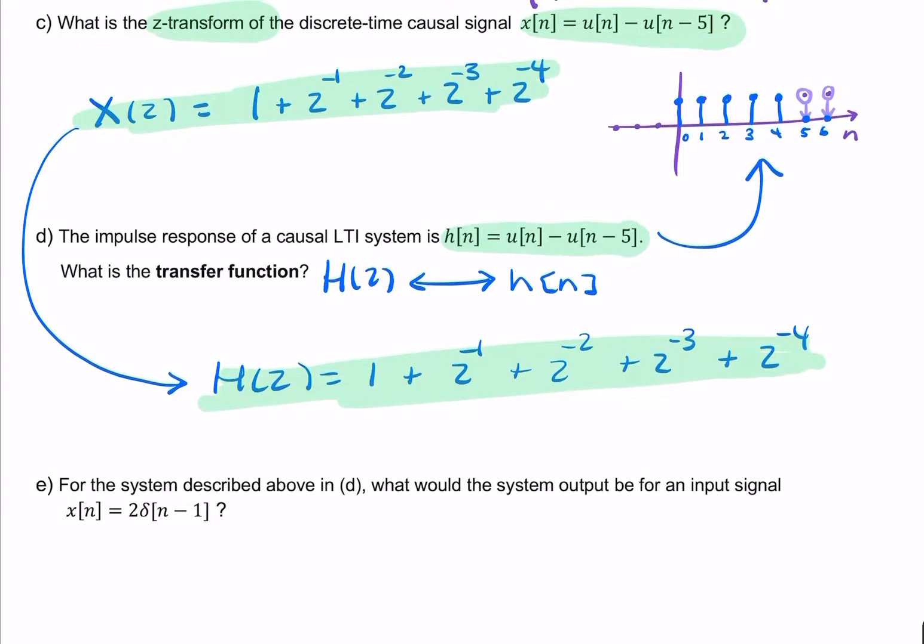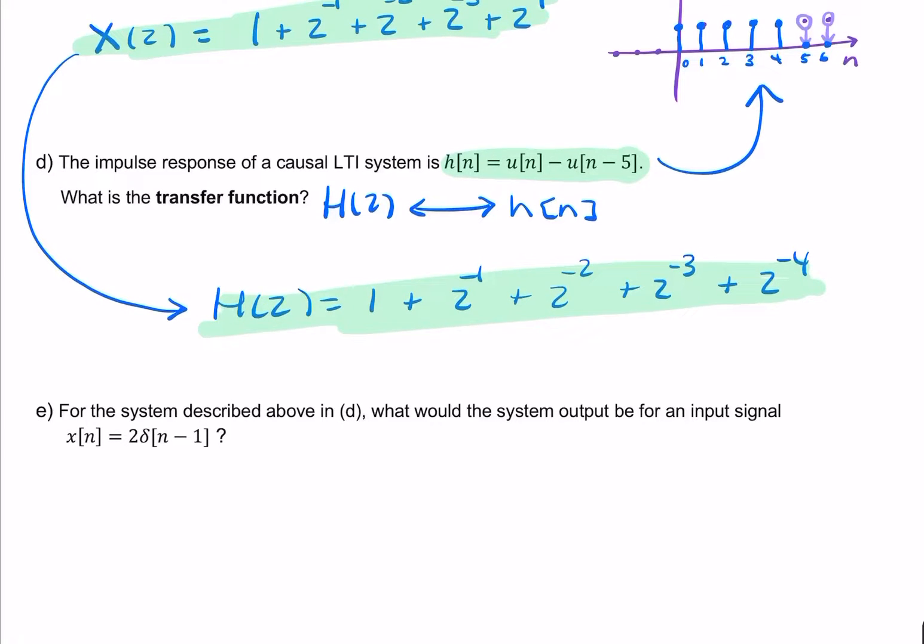For part e, we're told that our input isn't an impulse, or it isn't an impulse at t equals 0 or n equals 0. It's an impulse that's both scaled by a factor of 2 and delayed by a factor of 1. So you'd expect the output to be both delayed by a factor of 1 and scaled by a factor of 2. So y of n is equal to h, not of n, but of n minus 1. So it's 2 because there's a scaling factor. h of n minus 1.